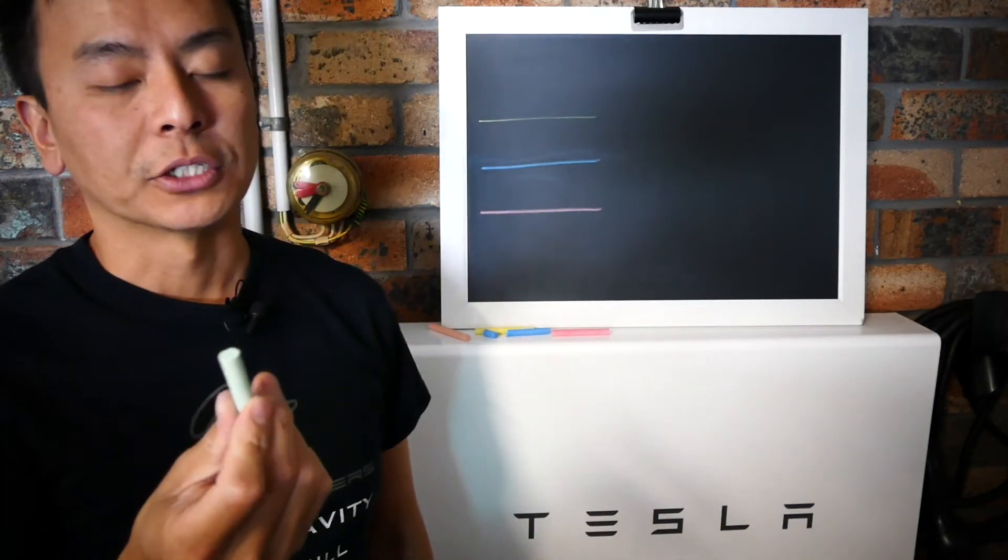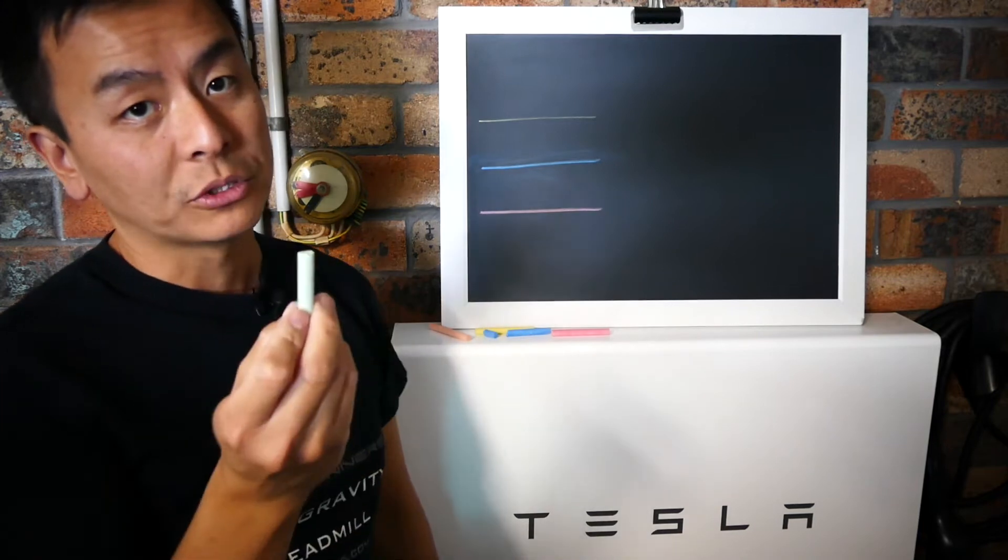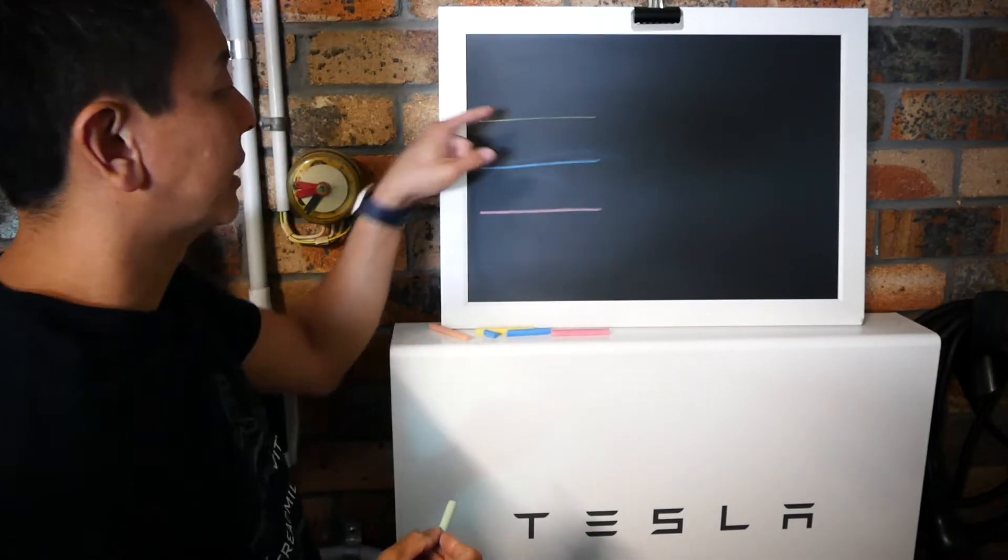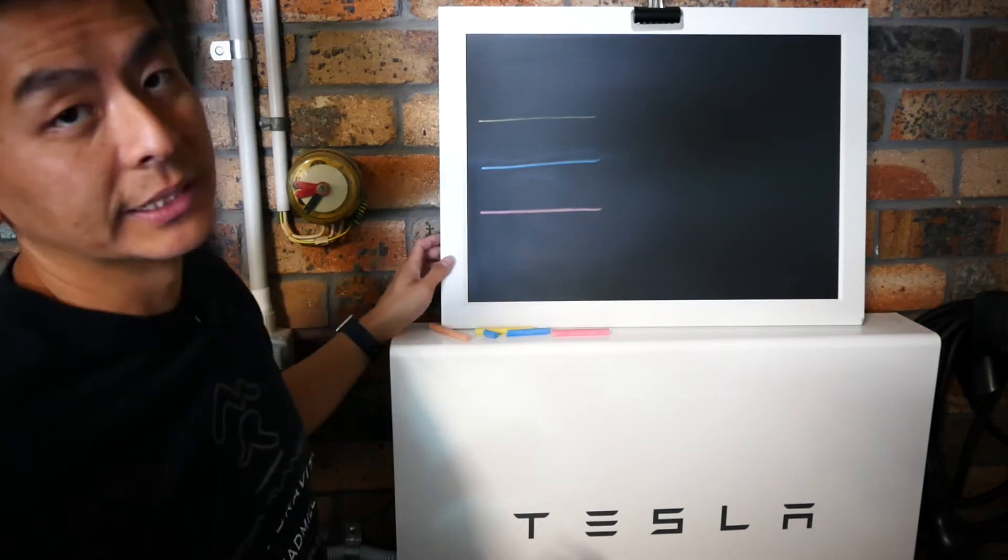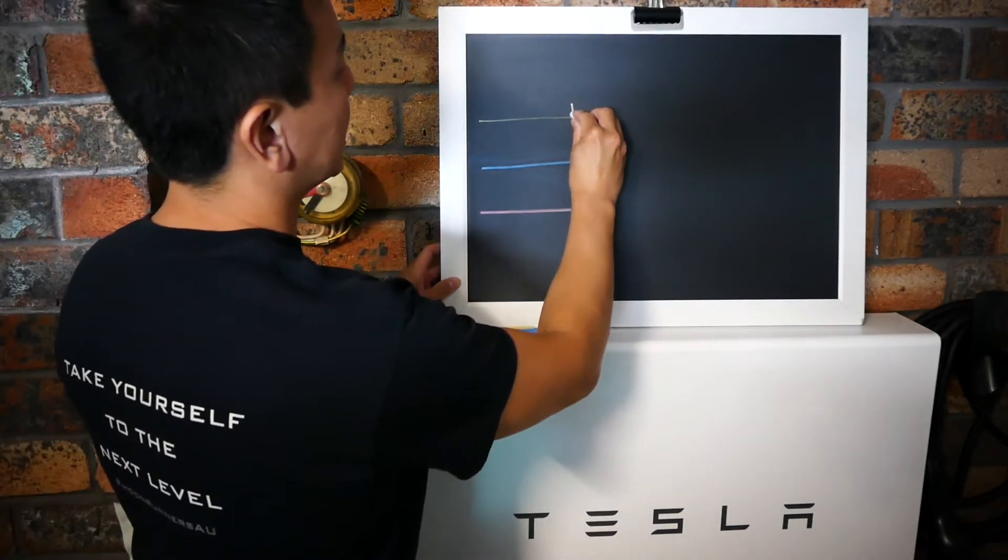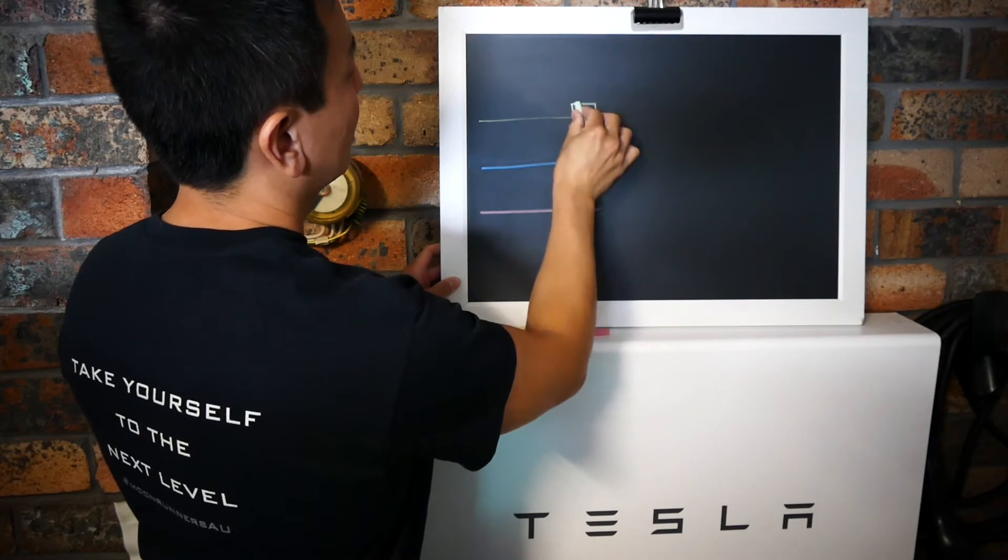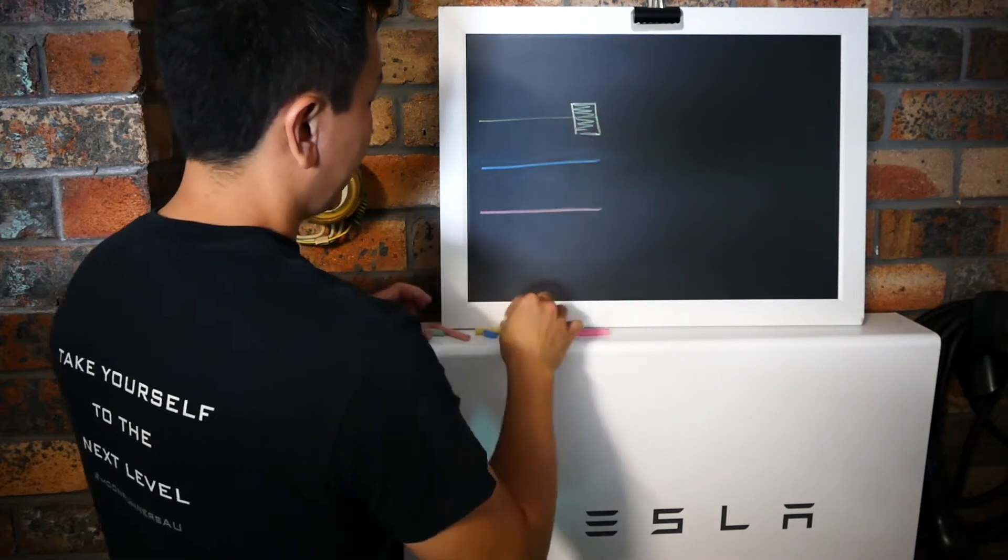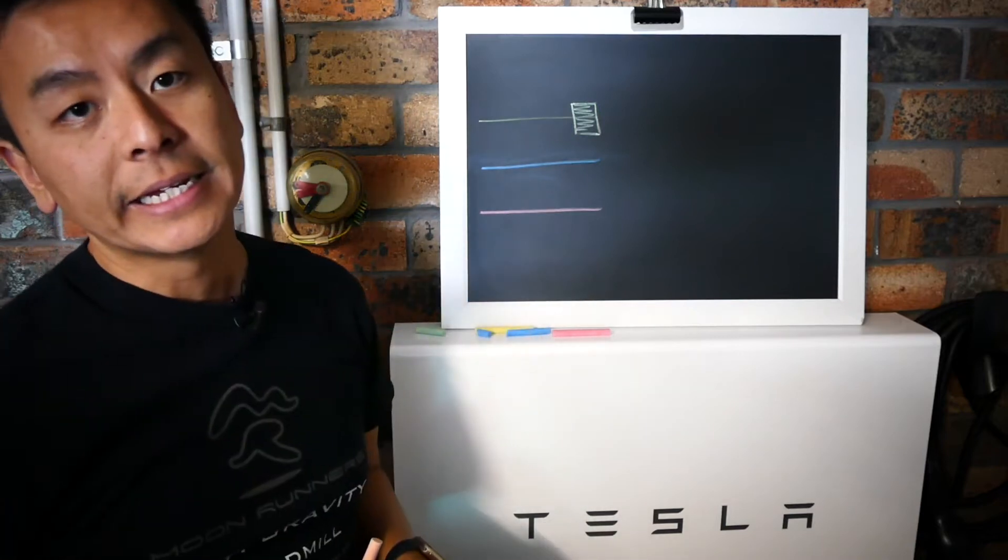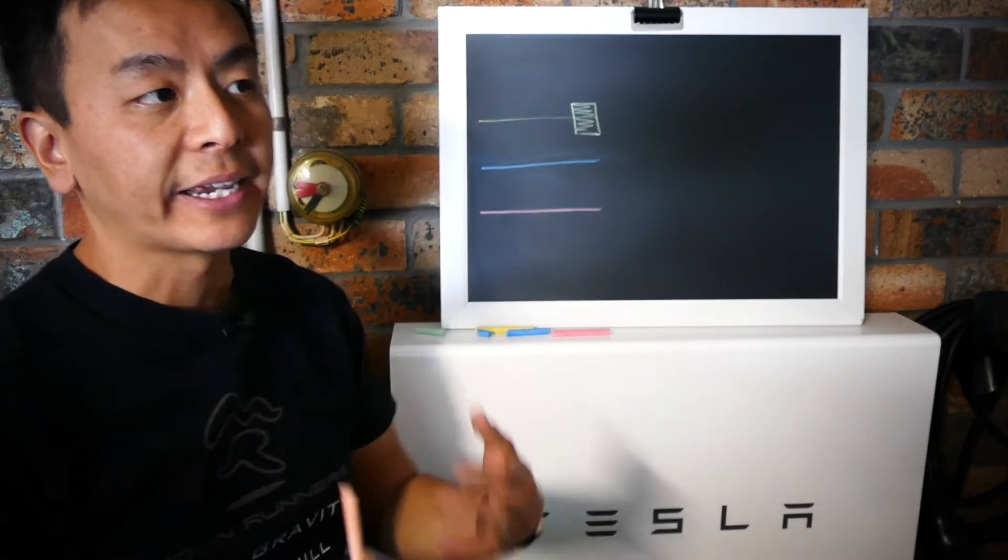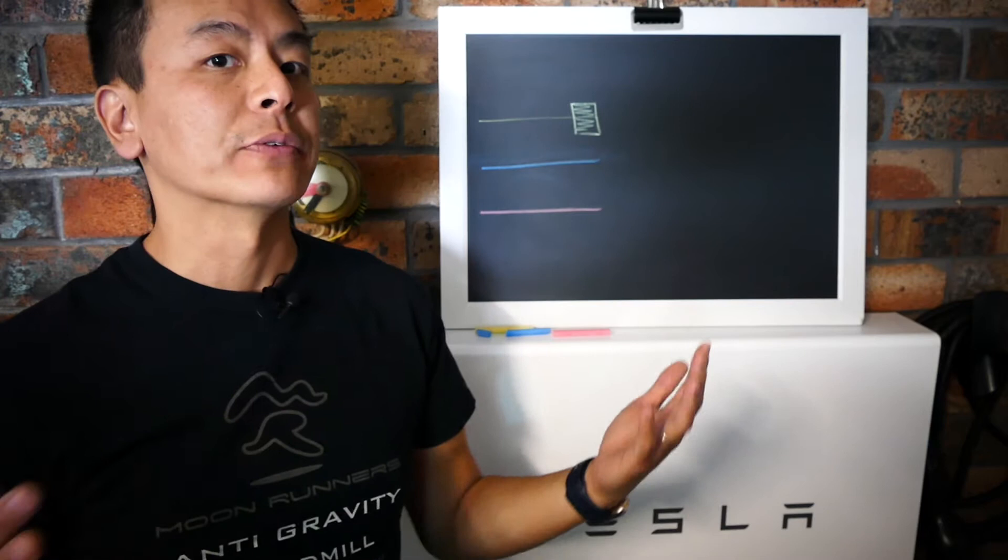And I'm going to denote the Powerwall 2 in green like so. The Powerwall 2 is only single phase so it will only cover you on the one phase which I'll use as the yellow phase. So the Powerwall 2 sits here. And when you purchase a Powerwall 2 you also get a box called the Gateway.